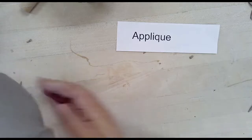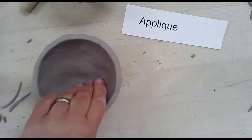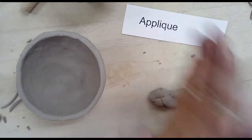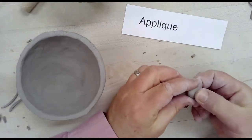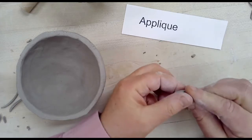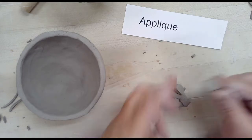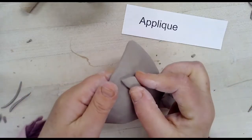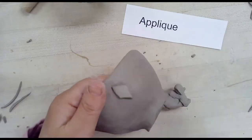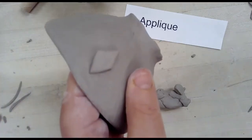A final type of texture that we can explore is a technique called applique. Applique is the process of taking other small bits of clay and adding it to the surface of your tea bowl. Here I'm shaping a simple flat diamond piece that I'm going to attach to the side of my bowl and possibly continue a ring around the bowl to create a pattern of diamonds.